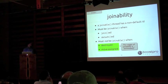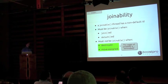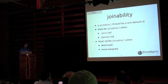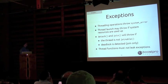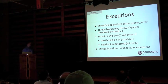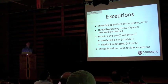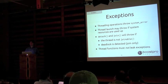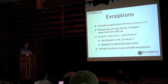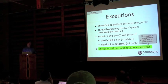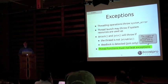If you do something on a thread that's not joinable, what you'll get is a termination — your program will just abort. Threading operations throw system_error. You may get an exception right away when you launch the thread if there are no resources available. Detach and join will throw if your thread is not joinable, or if a deadlock can be detected — for example, if you try to join yourself. Your thread functions may not leak exceptions; otherwise you're going to terminate as well.